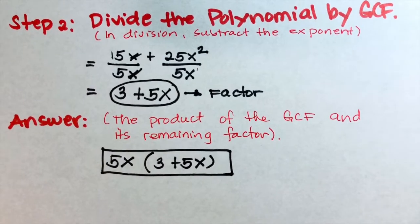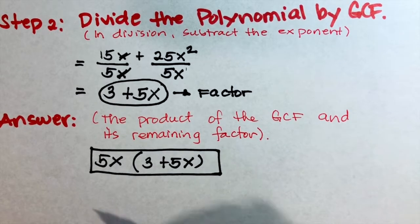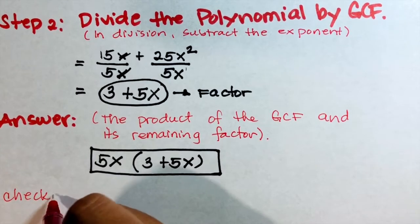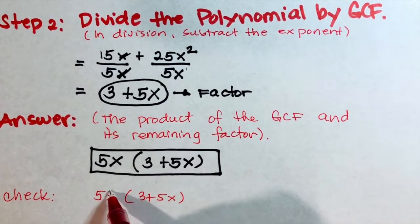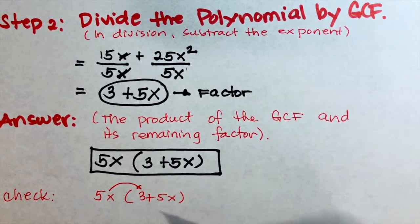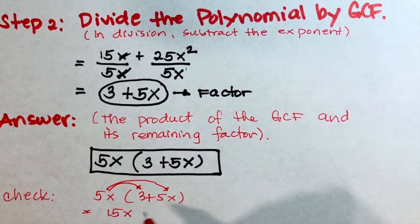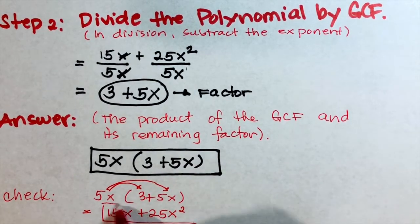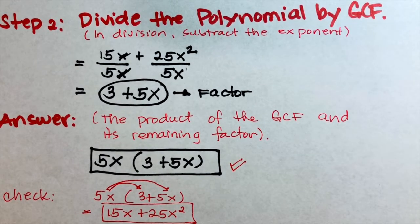We call this distributive property factoring because we use distribution to check our answer. To check: multiply 5x times 3 plus 5x. Using the distributive property, 5x times 3 equals 15x, and 5x times 5x equals 25x squared. This matches the original expression, so the factored form 5x times (3 plus 5x) is correct.